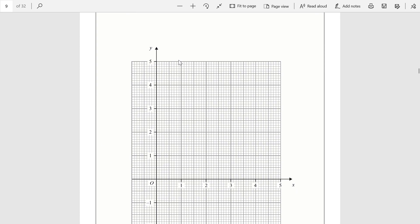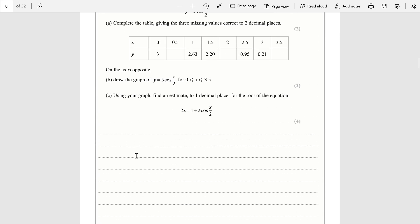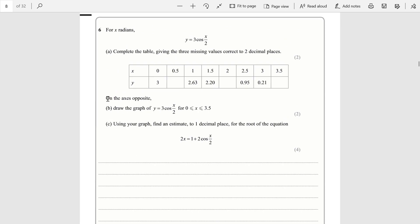Firstly, part (a): completing the table, give the three missing values correct to two decimal places. This should be fairly easy; you can simply use a calculator and find the values you're looking for. So for example, 3cos(0.5)/2 is 2.9067, so that would just be 2.91.